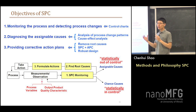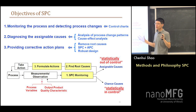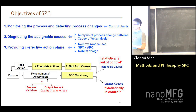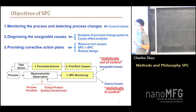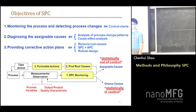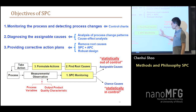For an out-of-control process, it may still produce conforming products — only the defective rate is much higher than for an in-control process. How can SPC help with the reduction of variation? There are three major objectives of SPC. First, monitoring the process and detecting any process change — control charts are used for this. Second, diagnosis: not only do you need to know what is wrong, but also why. That's the role of root cause analysis. Third, providing corrective action plans: remove the assignable cause, and you can also combine SPC with automatic process control for real-time control.